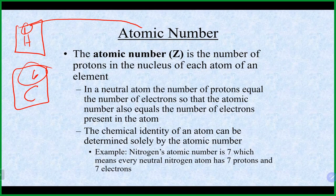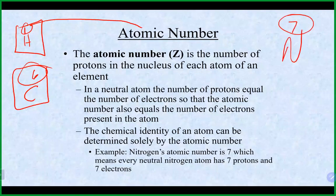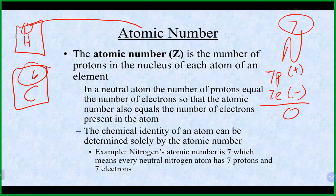For example, nitrogen has the atomic number seven on the periodic table. That means a neutral nitrogen atom has seven protons, which are positively charged. Because it's neutral, it also needs exactly seven electrons to balance the charge, giving it no overall charge.